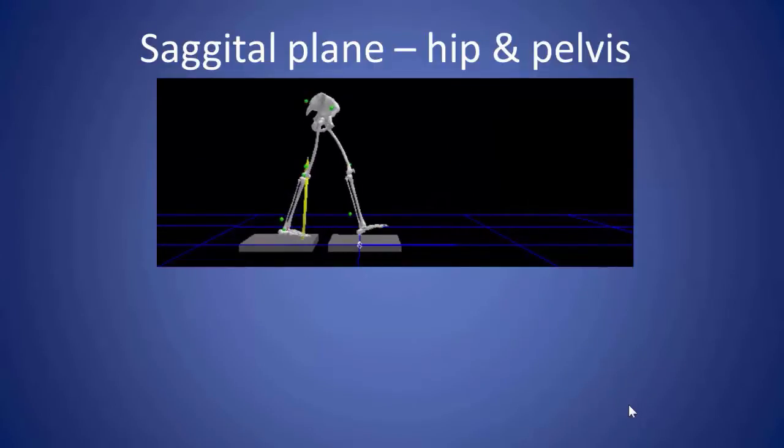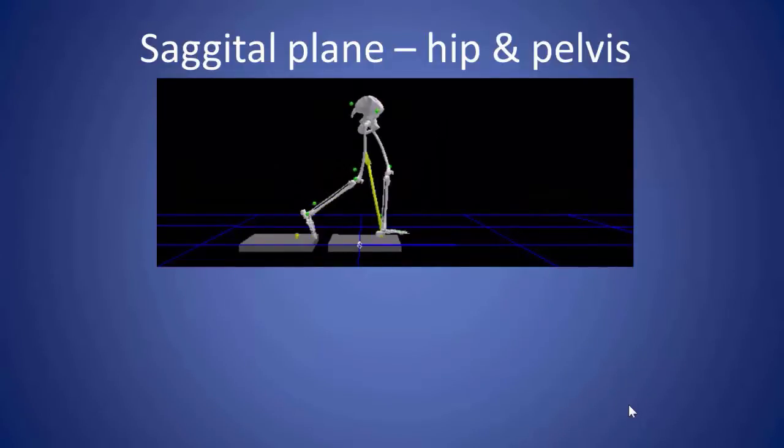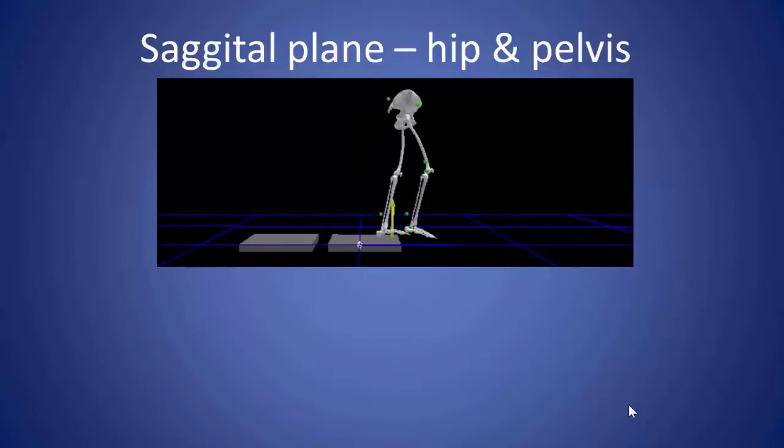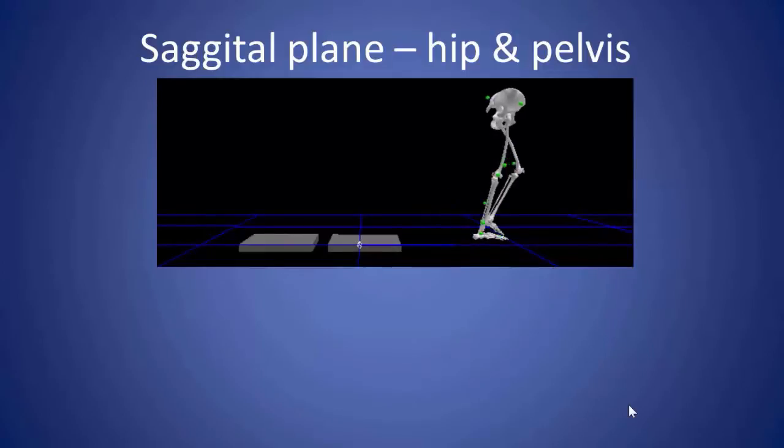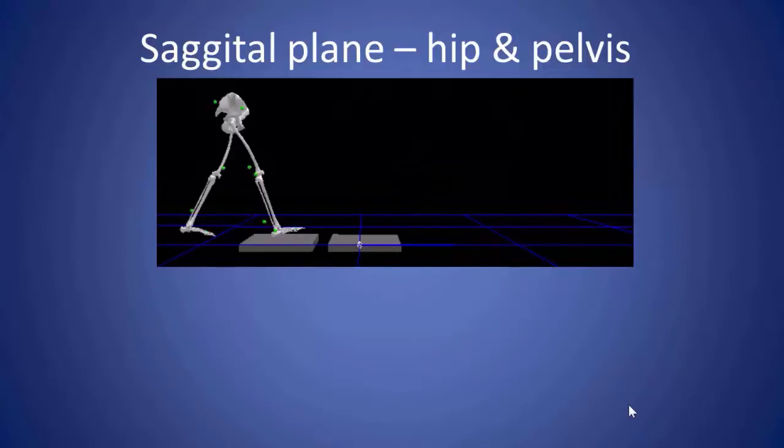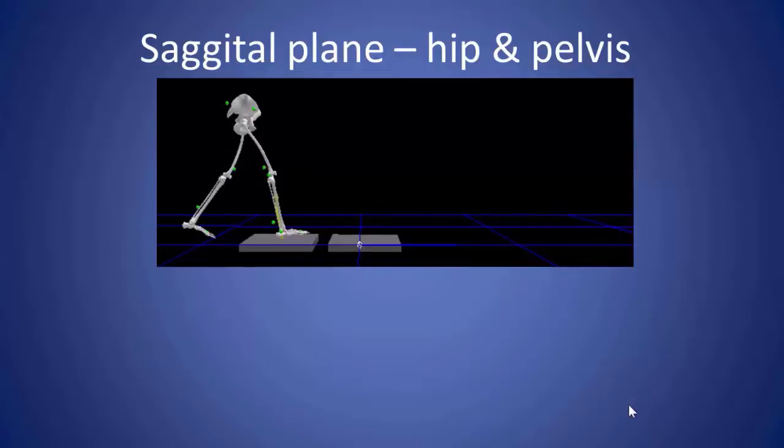So it's basically extension, which powers the hip extensors to move the center mass forward, followed by flexion to pre-position the leg to accept weight for the next step to continue to power the trunk forward.